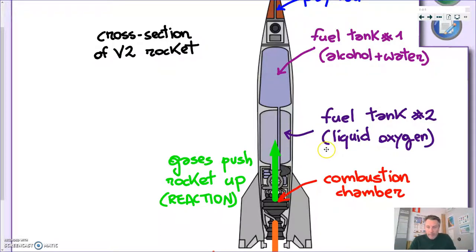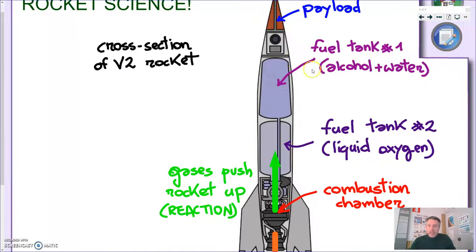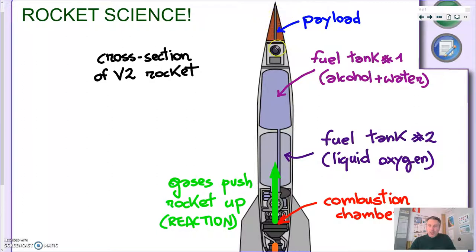And the first thing that should strike you is that a rocket is mostly made of fuel tanks. What you carry with your rocket is just this tiny portion on the top. This is the payload. Most of the rest of the rocket is made of fuel tanks.